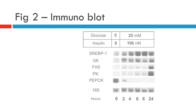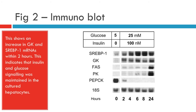Figure 2 shows an immunoblot of glycolytic and lipogenic gene induction by glucose and insulin. Hepatocytes cultured for 16 hours in the presence of 5 millimolar glucose without insulin were maintained for a further 24 hours in the presence of 25 millimolar glucose and 100 nanomolar insulin. Total RNA was subjected to blot hybridisation with indicated 32-phosphate labelled cDNA probes. The blots are representative of three independent experiments.